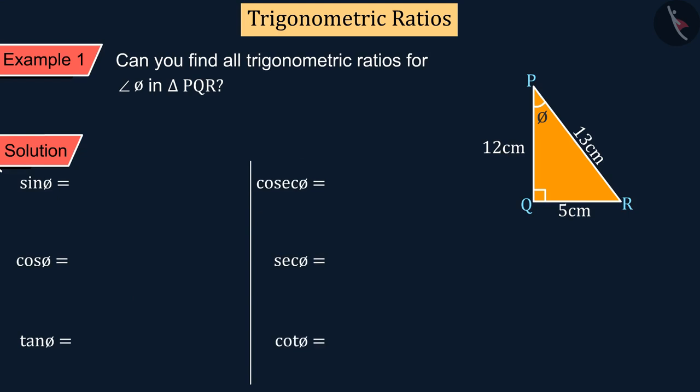In the previous video, we learned that the ratio between the opposite side of the angle and the hypotenuse is the sine of that angle.